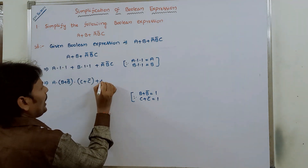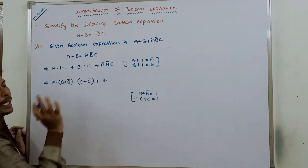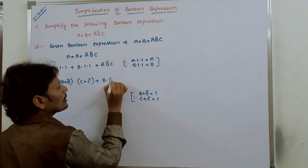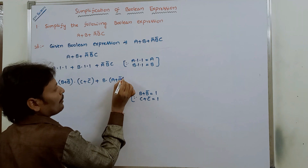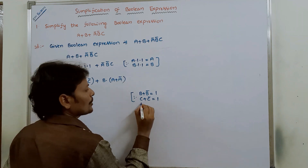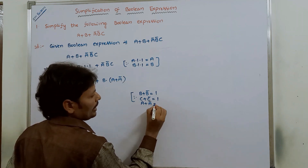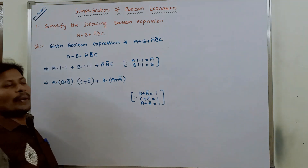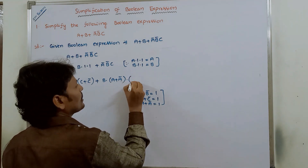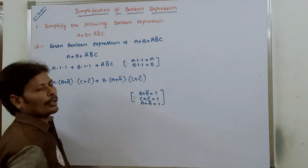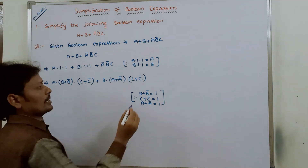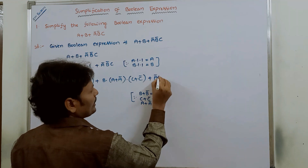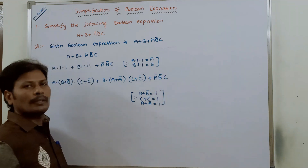Similarly, for the second term b, the missing variable a can be replaced with (a + ā), where a + ā = 1, and the missing variable c can be replaced with (c + c̄), where c + c̄ = 1. The third term ā·b̄·c already contains all three variables, so there is no multiplication with 1.